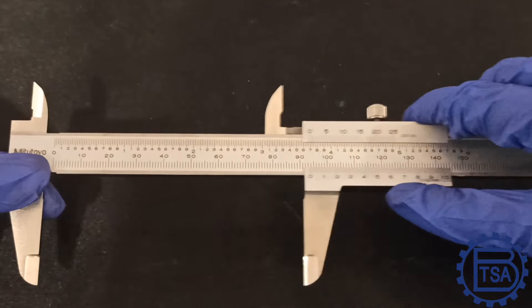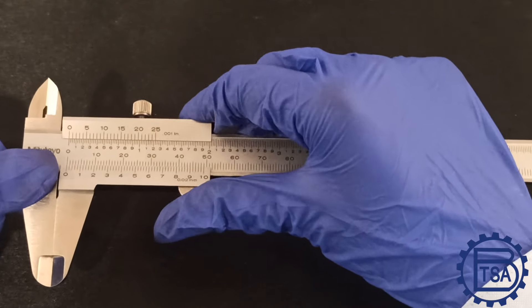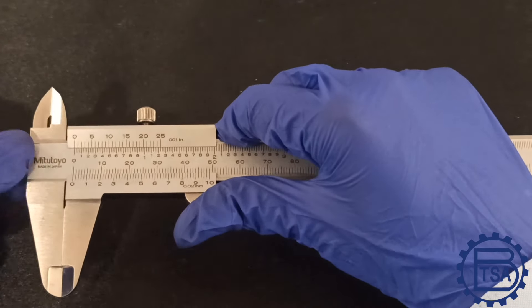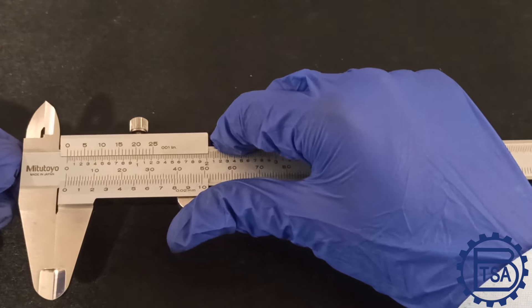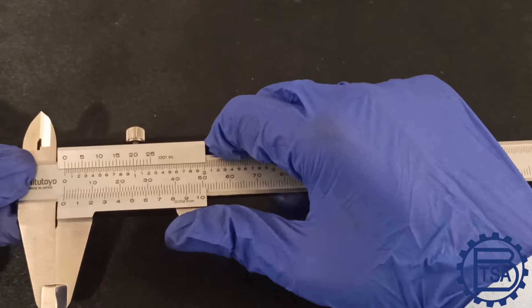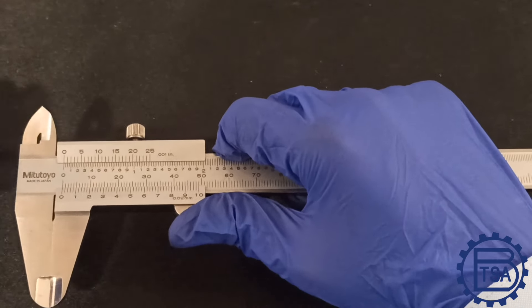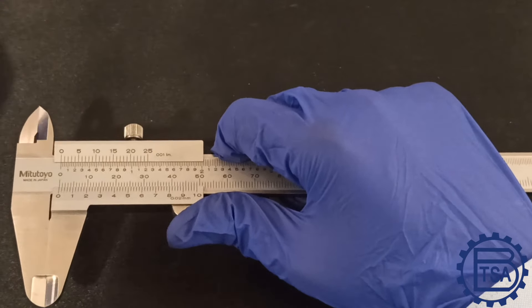Ensure that the sliding jaw moves smoothly over the length of the beam. Due to step height of the vernier scale relative to main scale, if viewing direction is not directly above the reading, it may lead to parallax error. Initially, set the zero setting of the caliper. If not, it will lead to abrupt results.